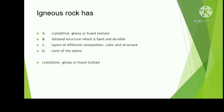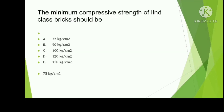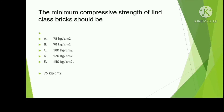The answer is crystalline, glassy or fused structure. The minimum compressive strength of second class brick should be 75, 90, 100, 120, or 150 kg per cm²? The answer is 75 kg per cm² for second class brick.